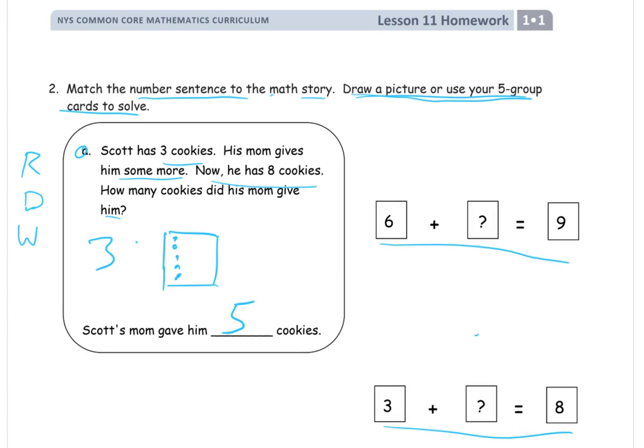And so, that is going to match up with this number sentence here. Three plus we didn't know how many cookies, right? That's the question mark. We didn't know how many more. It said some more, but we didn't know exactly how many more. So, it turned out that it was five. Five more. And that's this number sentence.